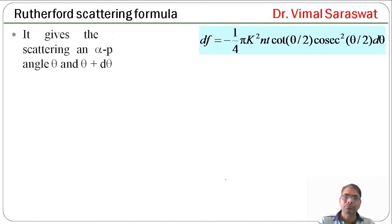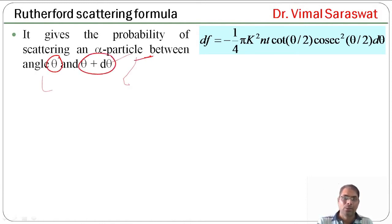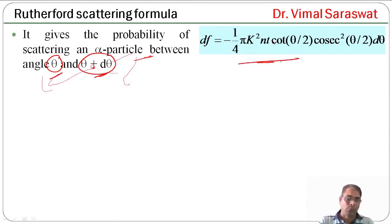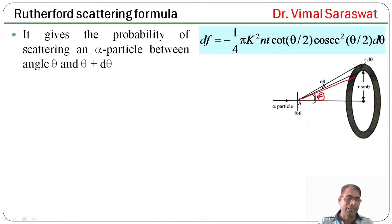df gives the probability of scattering an alpha particle between angle θ and θ + dθ. Now referring to the diagram: we have the gold foil, alpha particles incident from one side, and after scattering from the gold foil they move in all possible directions. The direction at scattering angle θ and the direction at θ + dθ define a ring, with angular width dθ.